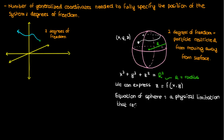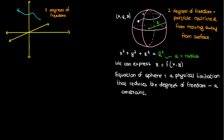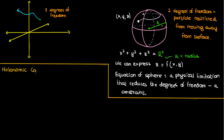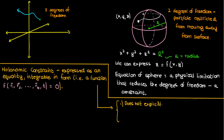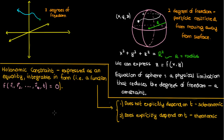The equation of the sphere is responsible for this fall in degrees of freedom, and in general, any physical limitation which causes a fall in the number of degrees of freedom is called a constraint. Specifically, this constraint is called a holonomic constraint. A holonomic constraint is a constraint that's expressed as an equality and is integrable in form — basically a constraint that can be written as a function. There are two subtypes of holonomic constraints: one that does not explicitly depend on time, called a scleronomic constraint, and one that does explicitly depend on time, called a rheonomic constraint.